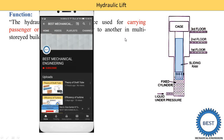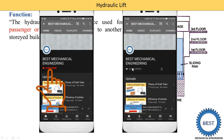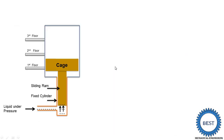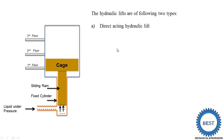Next, we study the construction and types. There are two types of lift. The first type is the direct acting hydraulic lift — here you see this figure, it is a direct acting lift — and we study this direct acting hydraulic lift with its animations. The second type is the suspended hydraulic lift, which we will also study.